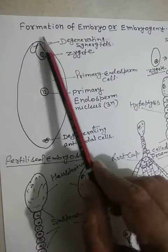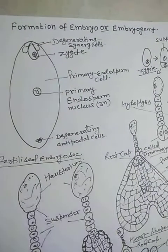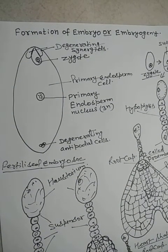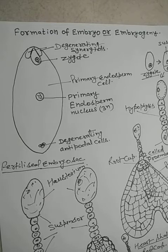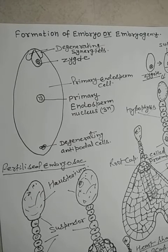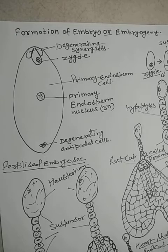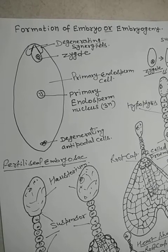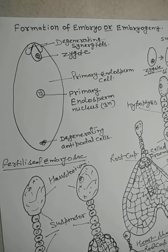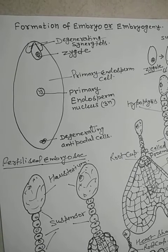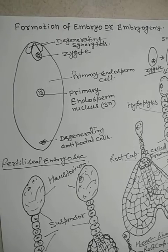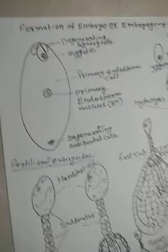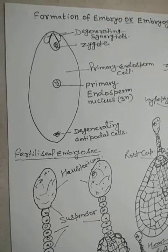Today we will discuss the post-fertilization events — that is, what events occur after fertilization. In the last class, we studied double fertilization in angiosperms. The events that occur after fertilization are: development of endosperm, development of embryo, formation of seed, and formation of fruits. These are the post-fertilization events.